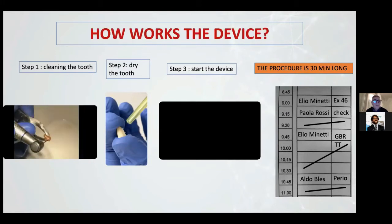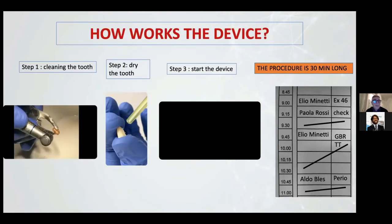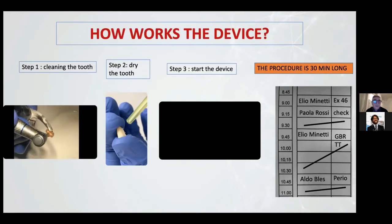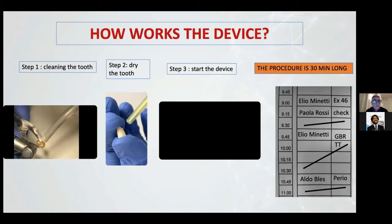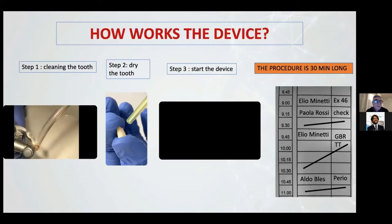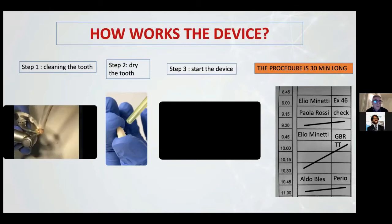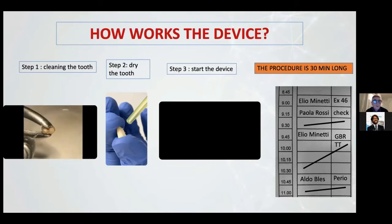We made a histological test and in no one did we find something not from the tooth origin — for example, gutta-percha or cement.